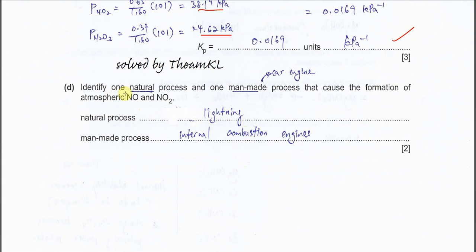Part D. Identify one natural process and one man-made process that caused the formation of atmospheric NO and NO2. In nature, the natural process is lightning. This will provide enough energy for the oxidation of nitrogen. The N triple bond breaks and it will form NO and NO2. Man-made process is car engines, internal combustion engines, because inside the engine it has very high temperature and very high pressure. Therefore, under this condition, the N triple bonds will break and nitrogen will get oxidized.